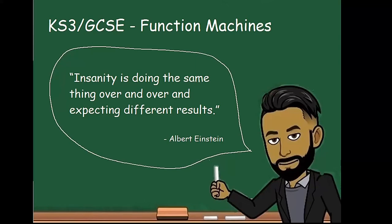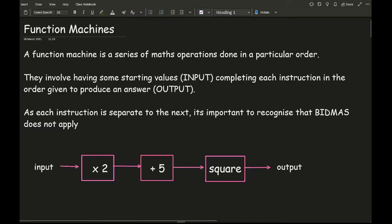In this video we'll be looking at function machines. A function machine is a series of maths operations done in a particular order. They involve having some starting values, which are called input values, and completing each instruction in the order given to produce an answer, which is called the output values.